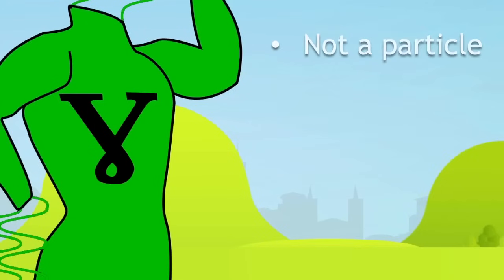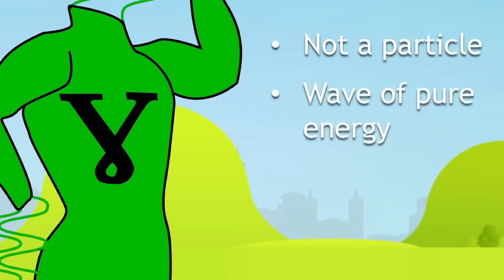Gamma radiation is not a particle like the other two. Gamma radiation is a wave. That means it's just pure energy, which goes up and down as it goes through the air.